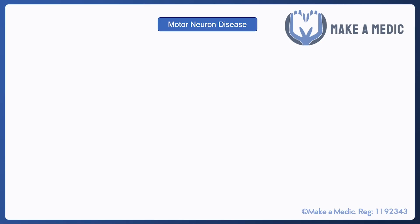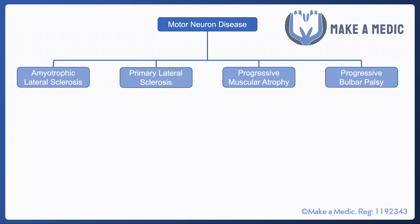Motor neuron disease is an umbrella term used to encompass a bunch of diseases that purely affect the motor neurons, and they can be very debilitating. There are four main diseases that fall under this umbrella, listed on screen right now.